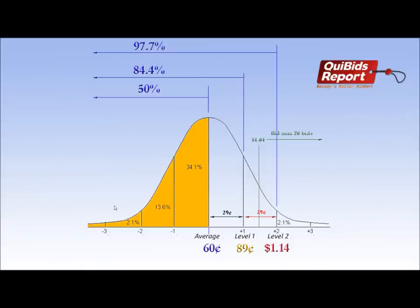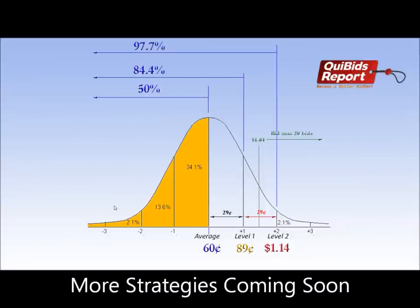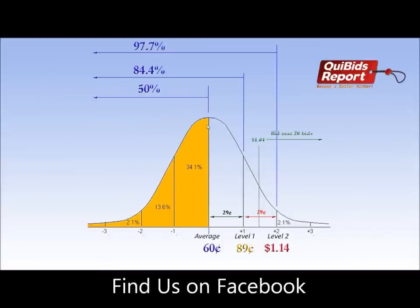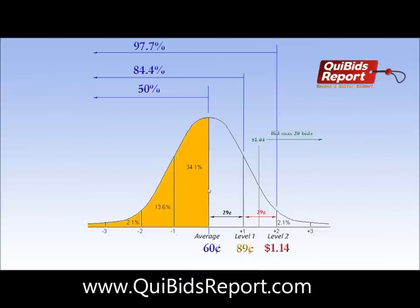What Quibid's Report did is observe over 12,000 closed auctions of 25 bid voucher auctions, and we modeled that data into this chart here. As you progress along the chart, the price goes up, and this curve represents the number of auctions that close — the frequency of auctions closing. Right in the dead center, the average represents about 50% of the auctions having closed by that point. Once you move out one level to what we call the level one upper limit, 84.4% of all auctions have closed by this point.